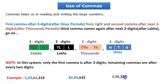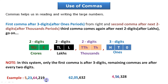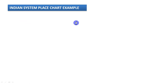One more example: first comma after three digits, second comma after two more digits — total two commas. Two commas means start reading from lakhs: four lakhs, fifty-six thousand, three hundred twenty-eight. Reading large numbers with commas is very simple once you understand the placement.